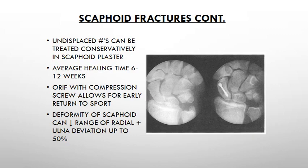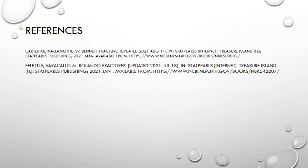Average healing time in a cast is 6 to 12 weeks. Ensure the cast is not too tight, that unaffected joints left open are mobilized early, and that edema is managed. ORIF with compression screws allows for earlier return to sport. Deformity of the scaphoid can alter the range of motion as well as radial and ulnar deviation by up to 50%.